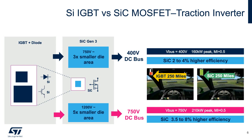The power losses considerations we just discussed can be visualized in this slide. If we target the same peak power of the traction inverter and compare the two cases for electric vehicles — 400-volt and 800-volt DC bus — we can calculate that silicon carbide will require much smaller die area to provide the same peak power, about three times smaller for a 400-volt DC bus inverter. Because of the lower power losses, silicon carbide inverters will have two to four percent improved efficiency in a 400-volt vehicle, and drastically four to eight percent for a 700-volt vehicle. This will translate into longer range per battery charge of the vehicle, which really depends on the motor and the car itself, but it would be significant.